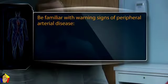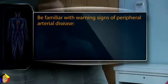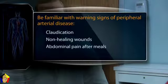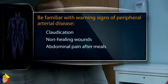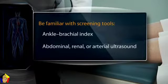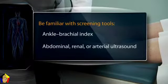Be familiar with the warning signs of peripheral arterial disease, including claudication. Note any non-healing wounds of the legs or feet, and abdominal pain after meals or food fear suggesting mesenteric ischemia. Screening by the ankle-brachial index and abdominal, renal, or arterial ultrasound may be indicated.